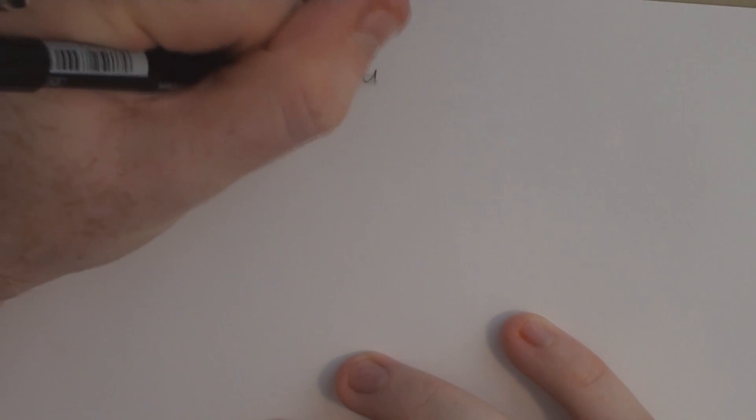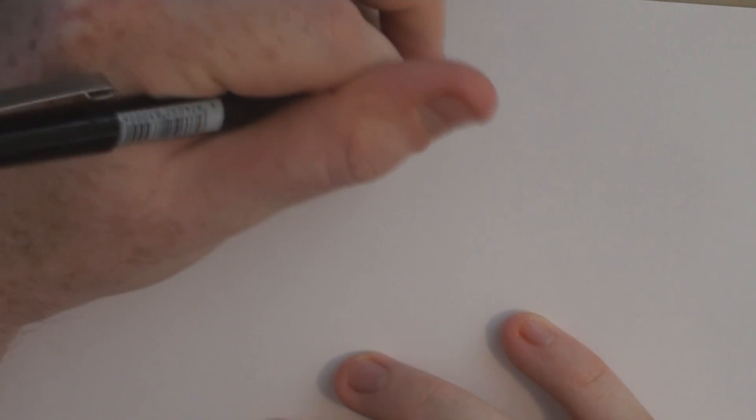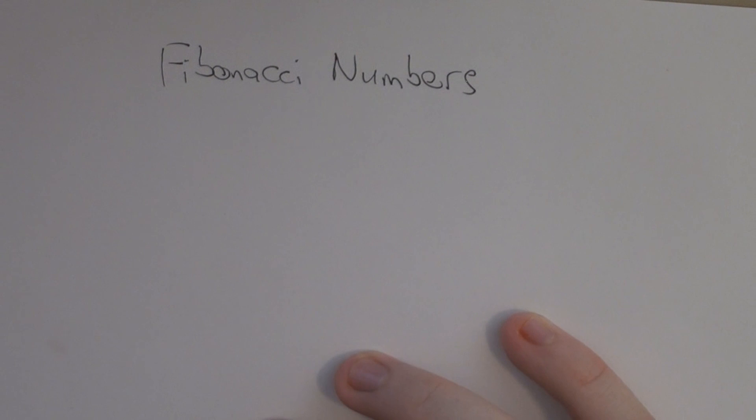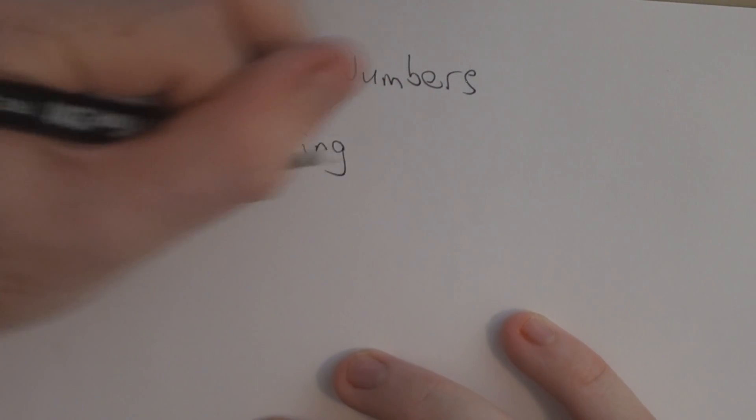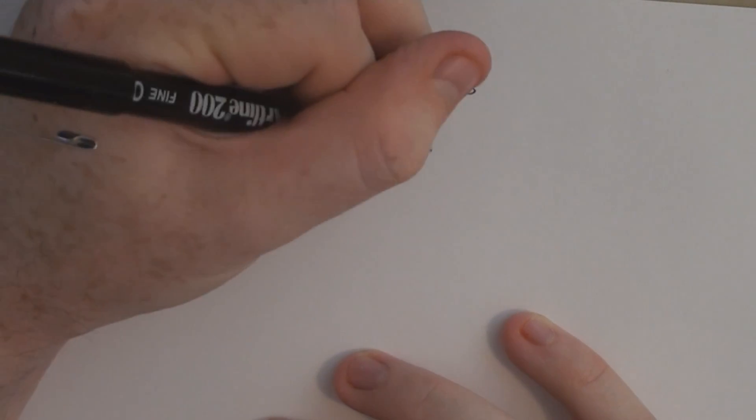Today we're going to talk about two things which I think are cool. The first thing is the Fibonacci numbers, which you may have seen. You may have read them before, you may not. If you haven't, you're probably very young. And the second thing we're going to talk about is generating functions, and we're going to use the latter to find out some stuff about the former.